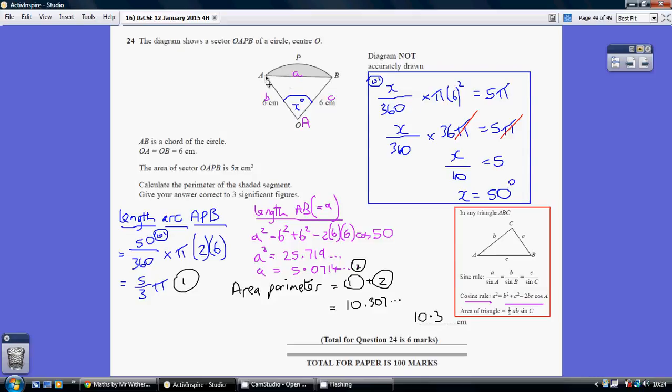Now to work out the length from A to B, which I'm calling little a, let's go back to this triangle, where we know two sides and we know the angle in between. So we could use the sine rule if we did it in two or three steps, but we can just use the cosine rule and do this in one go.